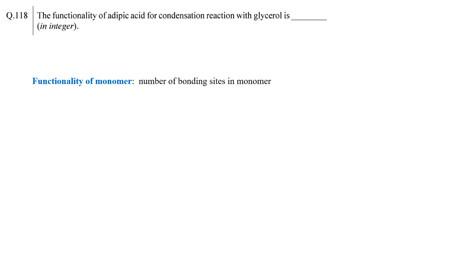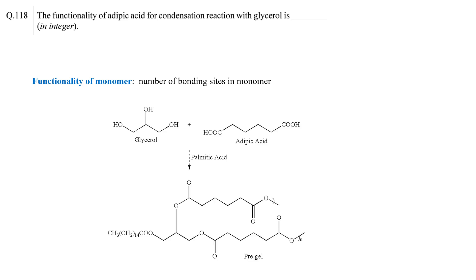Condensation reaction is a reaction process in which a small molecule is released during the reaction. In this example, the only way a small molecule can be released is through the reaction of the hydroxyl group of glycerol with the carboxylic group of adipic acid. Since adipic acid has two carboxylic groups, the functionality of adipic acid for this condensation reaction is two.